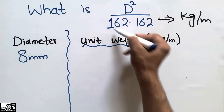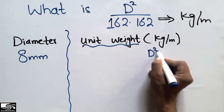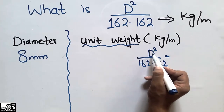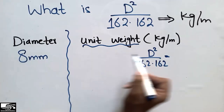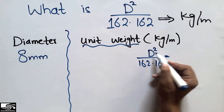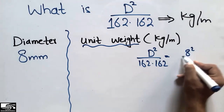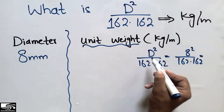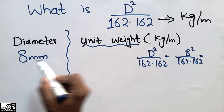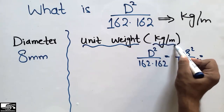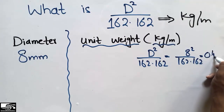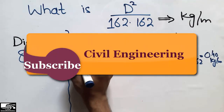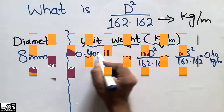The formula is D squared divided by 162.162. Putting in the diameter of this bar — 8 millimeters — we calculate 8 squared divided by 162.162, which gives us the unit weight in kilogram per meter. The result is 0.40 kilogram per meter, so I will write 0.40 kg/m for the 8mm bar.